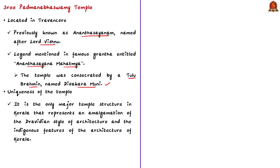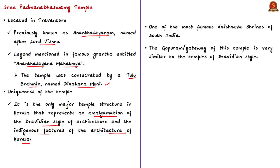Another legend is found in the old palm leaf records and in the famous granth titled Anantashayanam Mahatmyam, which mentions that the temple was consecrated by a Tulu Brahmin named Divakara Muni. It is believed that in the 950th year of Kali Yuga, a reinstallation of the idol was done. What makes the Padmanabha Swami Temple unique is its architecture — it is the only major temple structure in Kerala that represents an amalgamation of the Dravidian style of architecture and the indigenous features of Kerala architecture. It is also one of the most famous Vaishnava shrines of South India.